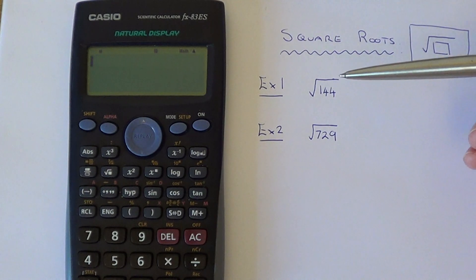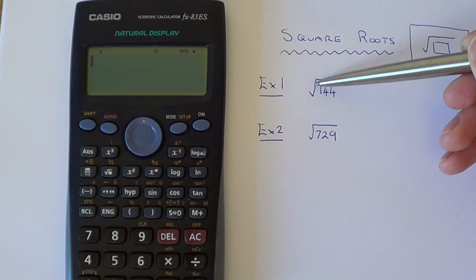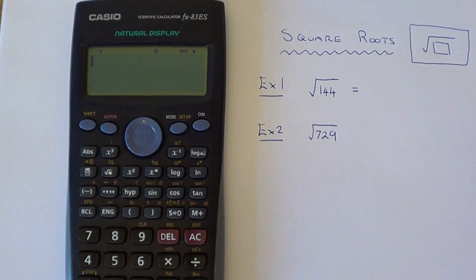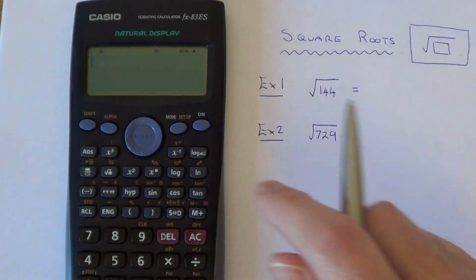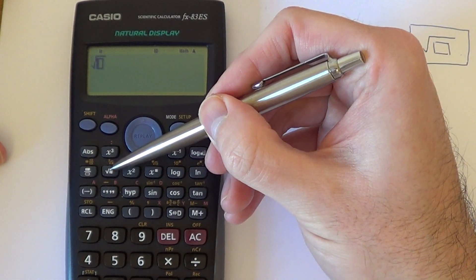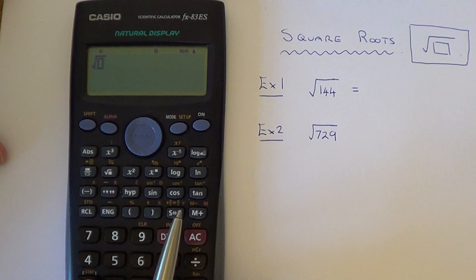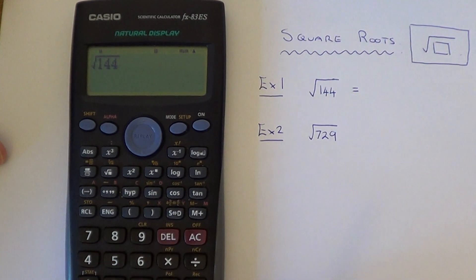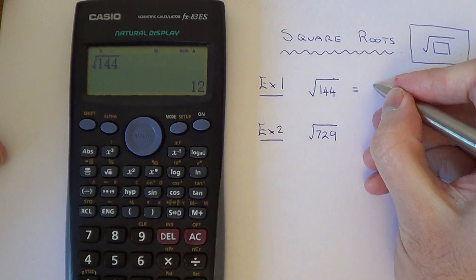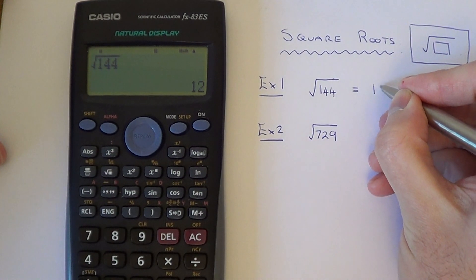So let's have a look at a couple of examples. So we need to work out the square root of 144. So first of all, hit our square root key, which is this one. So put the square root of 144, hit our equals key, and that will give us an answer of 12.